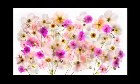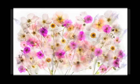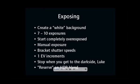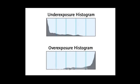With this image I've taken the painterliness of translucency and added it in several layers so that it's translucent on top of translucence. Here's the ten-second version of how you expose a translucent floral image: you create a white background, use seven to ten exposures, start completely overexposed, use manual exposure bracketing with shutter speeds in one-EV increments. You don't need anything on the dark side of an HDR blend. I also like to run those seven to ten exposures through an HDR program such as Photomatix or the Photoshop HDR program.